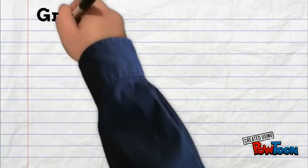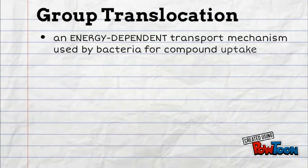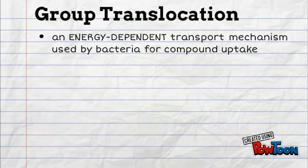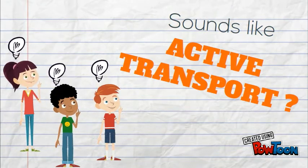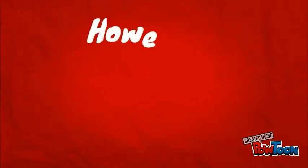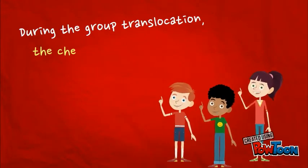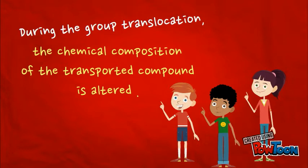Group translocation is an energy-dependent mechanism utilized by bacteria to transport a compound into the cell. Sounds similar to active transport. However, group translocation differs from active transport because the chemical composition of the compound transported is altered — generally by phosphorylation.